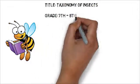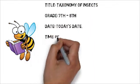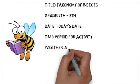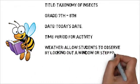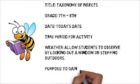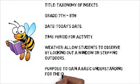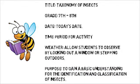Begin by opening up your journals to a new blank page and title it Taxonomy of Insects. We will now write down the first part of each and every field journal entry: the date, time, weather, location, and purpose.